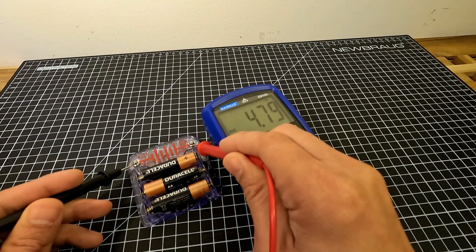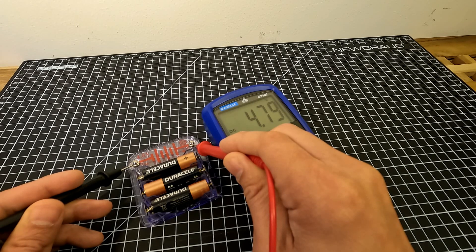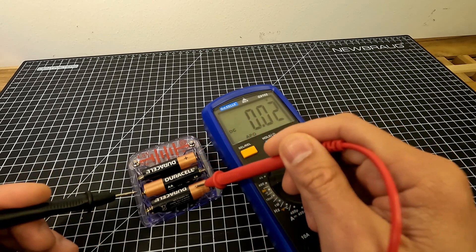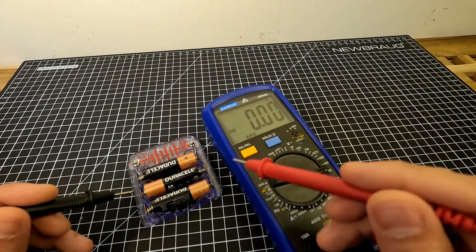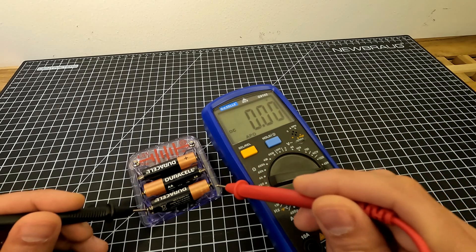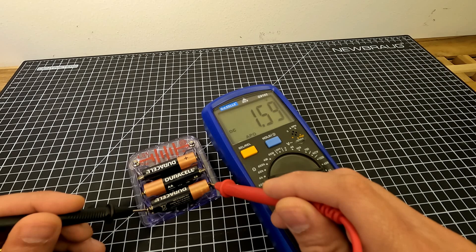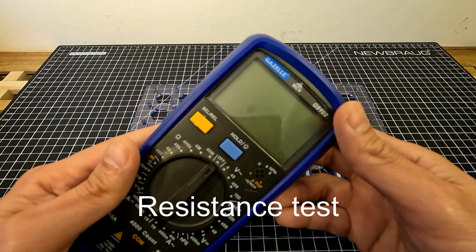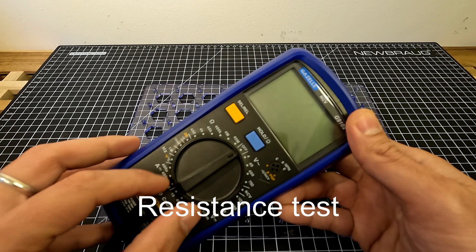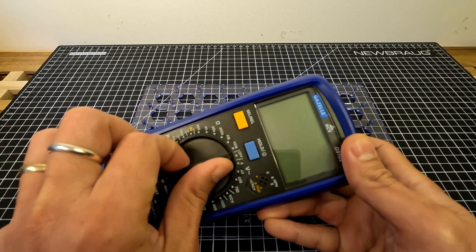Total of 4.79 volts because each of these is approximately 1.5. If you check directly to the battery then you will get 1.59 volts. So what kind of inspection can we perform here? We can set the multimeter right here in continuity test or what we call the resistance inspection.